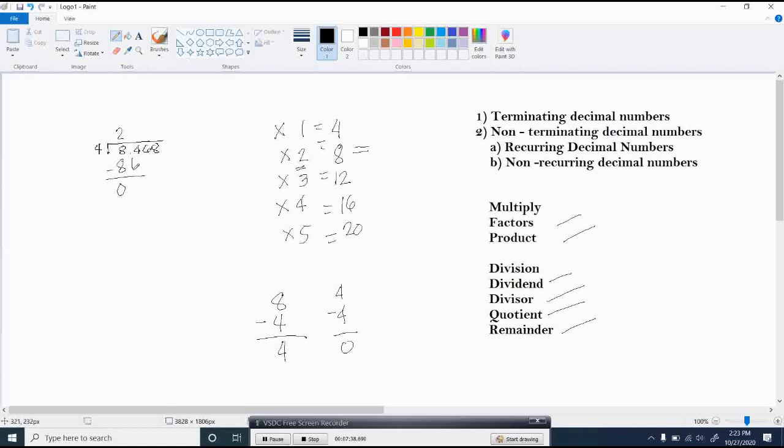Now let's continue. Then bring down 4. 4 divided by 4. Again, we do have 4 in table 4. So we can use that number. And that number is 1. Then proceed to multiplication and proceed to subtraction.